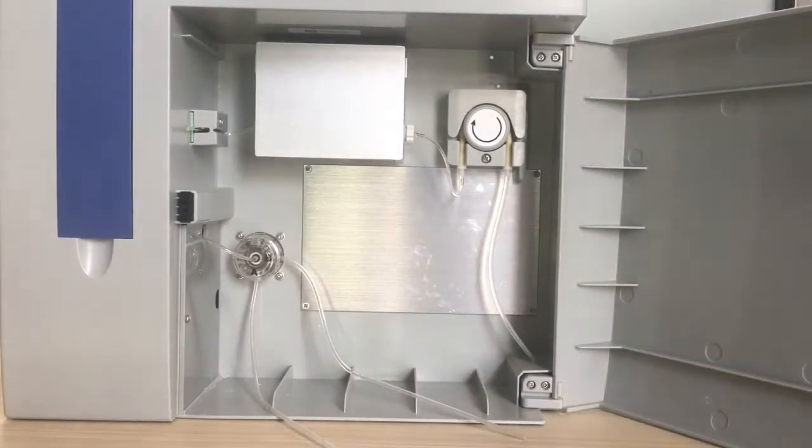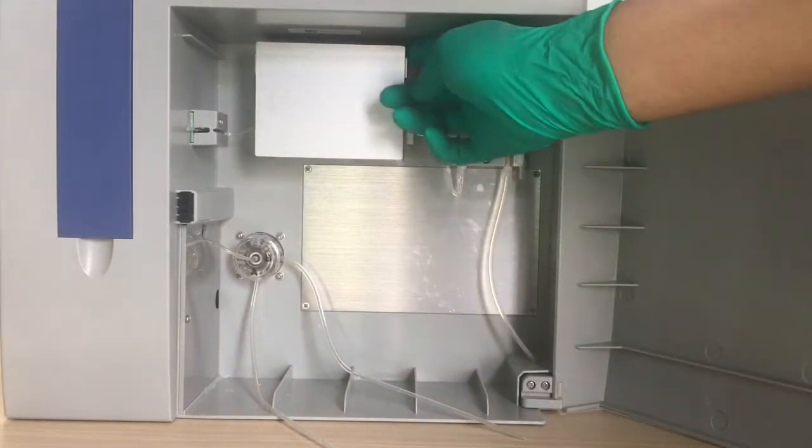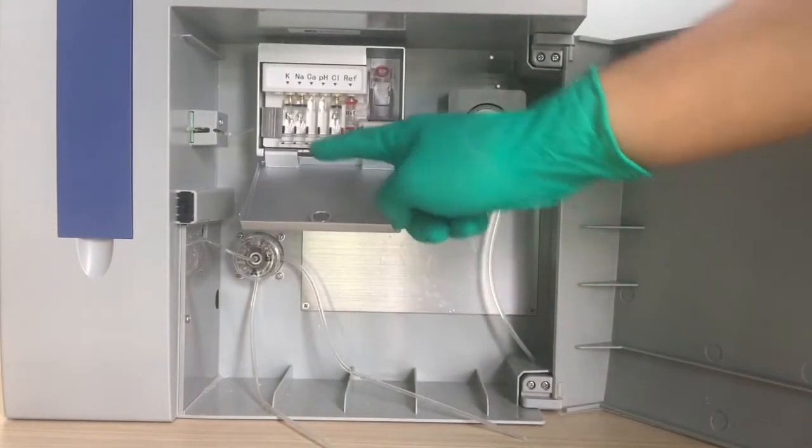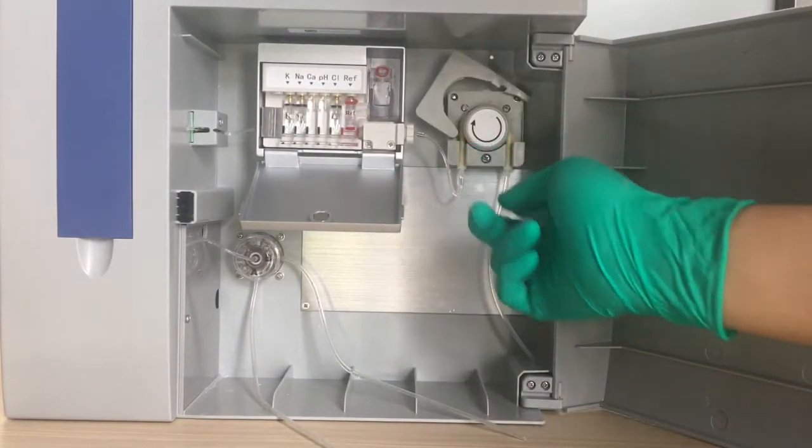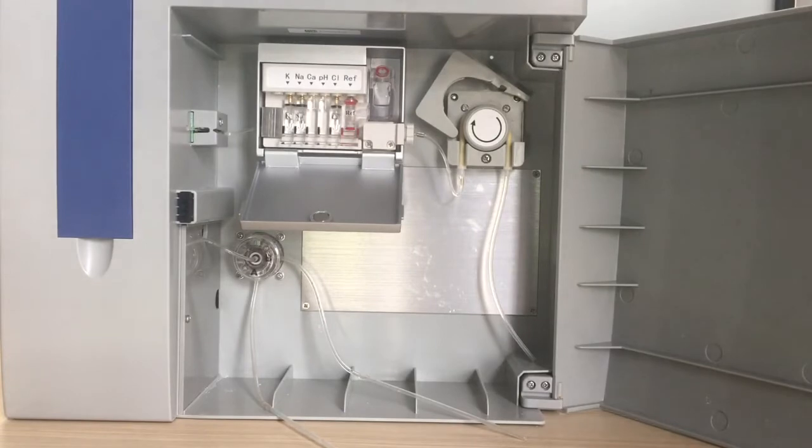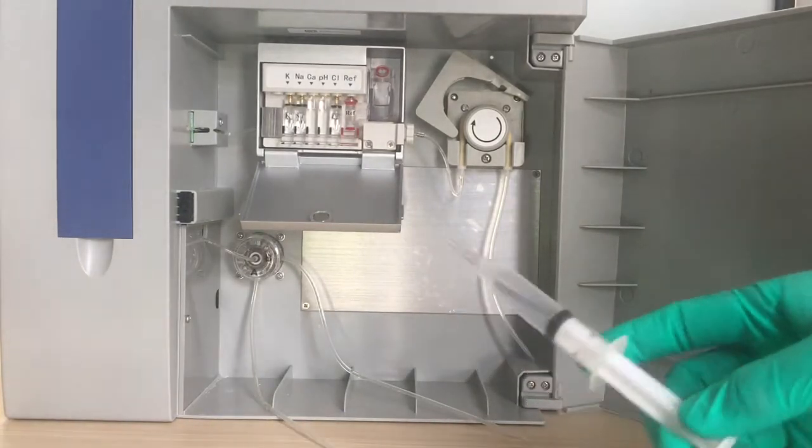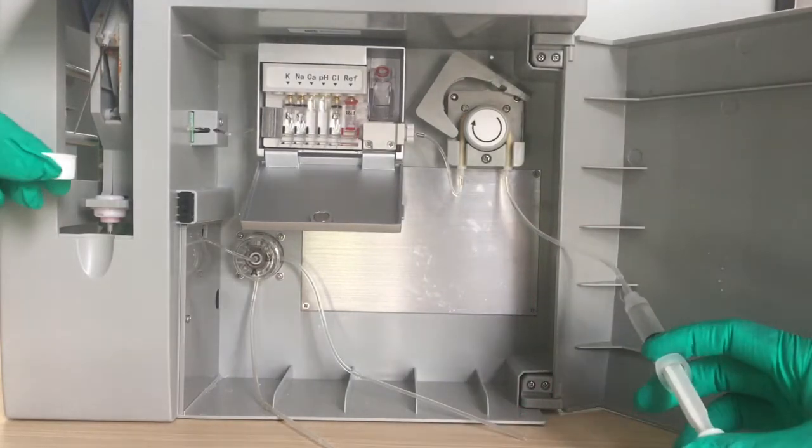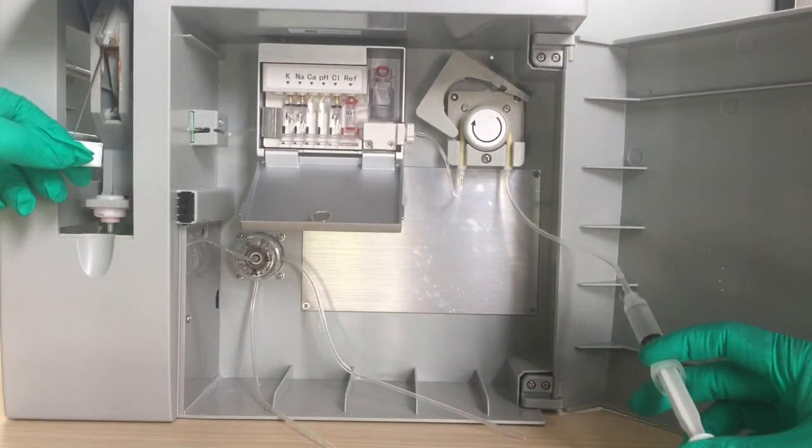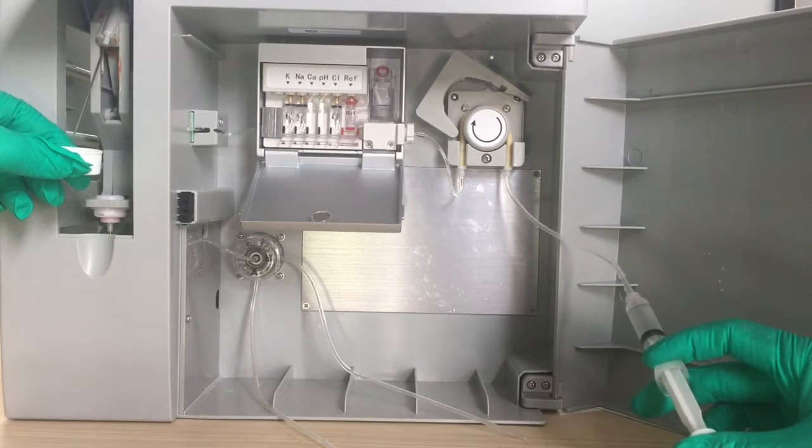To remove the blockage part-by-part, first we make sure the electrodes are installed, then we unlock the pump tube. Then use the syringe to take some distilled water, connect with the tube, and open the flap. We inject the water.